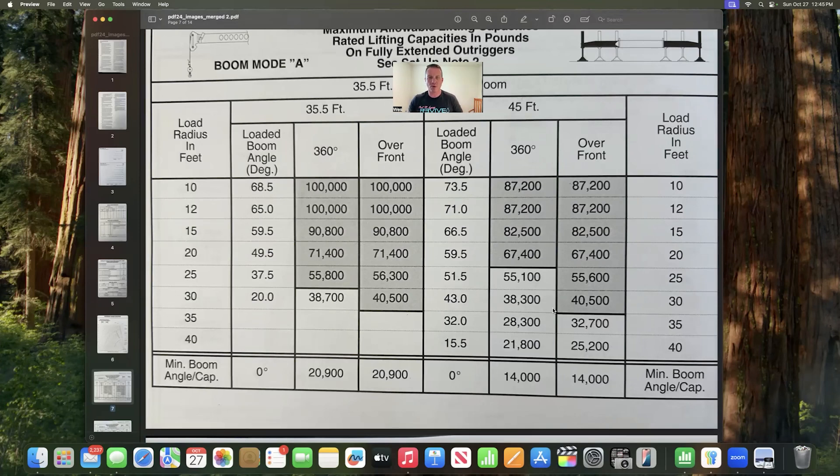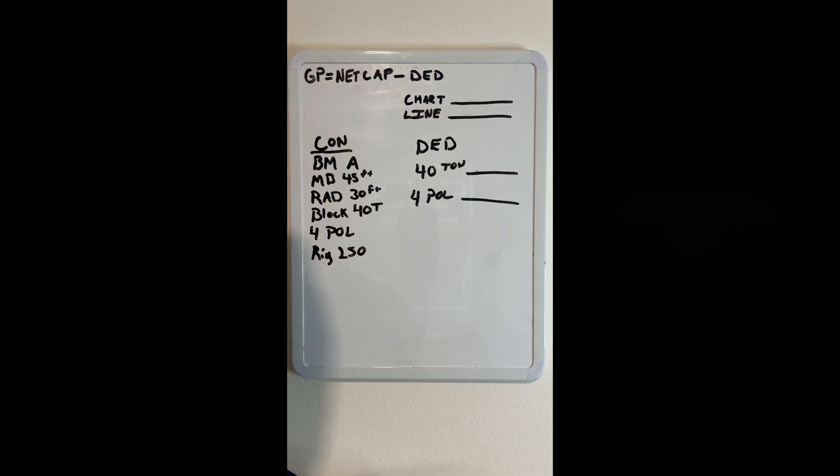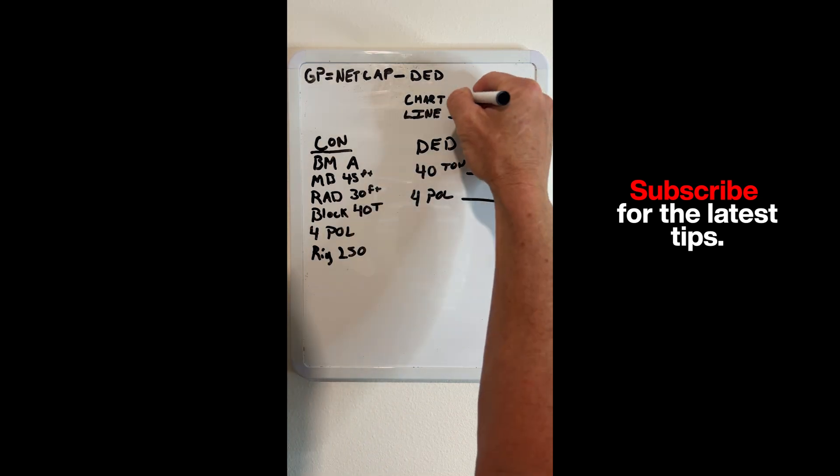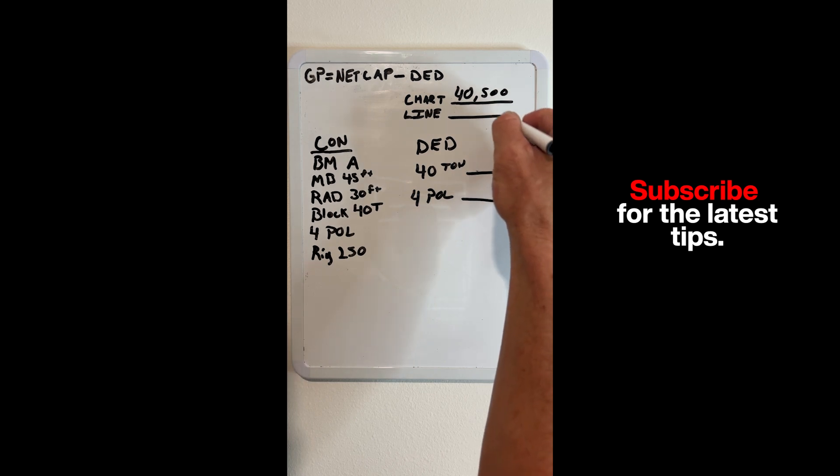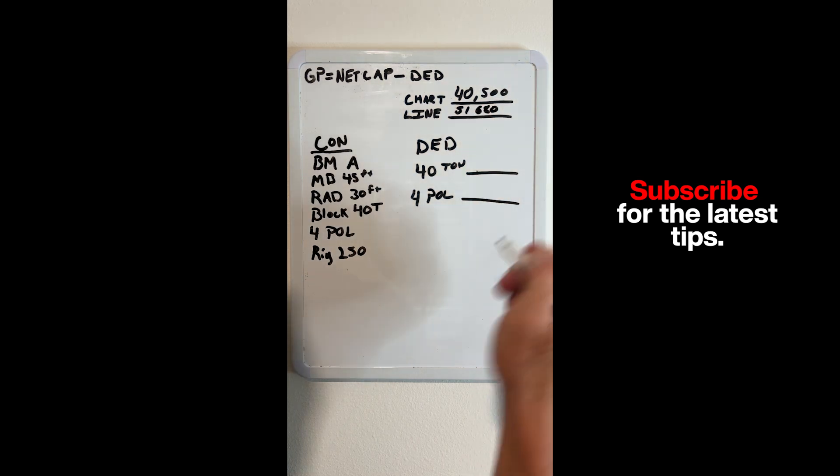So now let's go over to our whiteboard and do our deductions. Here is our formula: gross capacity equals net capacity minus deductions. Our chart was 40,500 and our line pull, which I didn't show you, was 51,680. So we'll go with the lesser of the two.